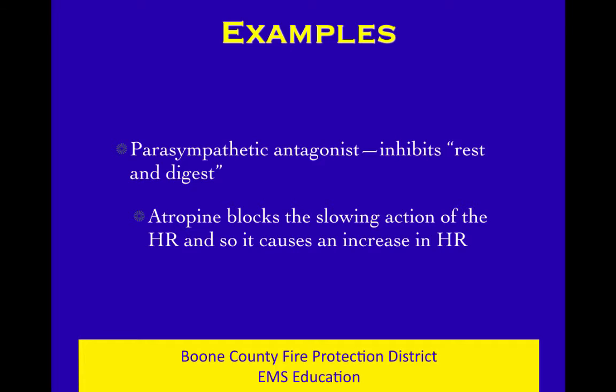Atropine is an example of a parasympathetic antagonist. Atropine blocks the parasympathetic system that would be slowing the heart rate. Because it's blocking something that slows heart rate, it ends up increasing heart rate. It sounds like we're talking in circles, and it's important to be precise with this — that's why I'm going slower than in other videos.